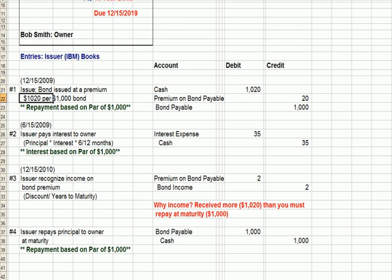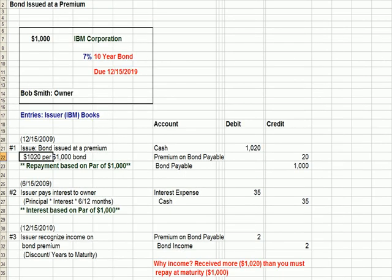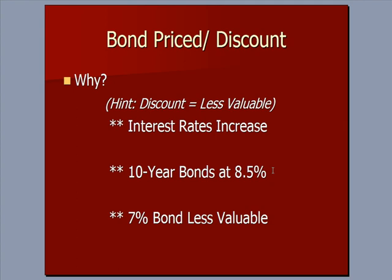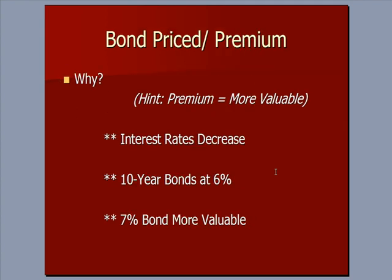Let's talk about a bond issued at a premium — the opposite. Remember the hint: anytime we buy something at a premium, we consider it to be more valuable. In this case, interest rates have decreased, which is the environment we've been in in recent years. 10-year bonds in the new environment are being issued at 6%, and now that 7% bond from IBM looks more valuable.